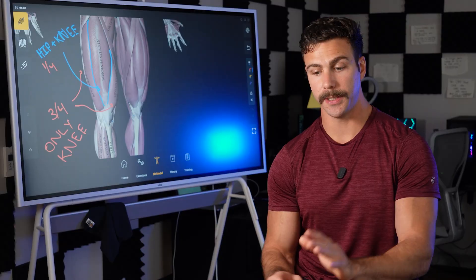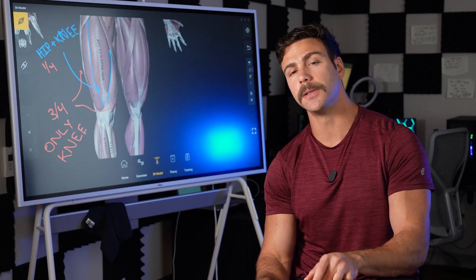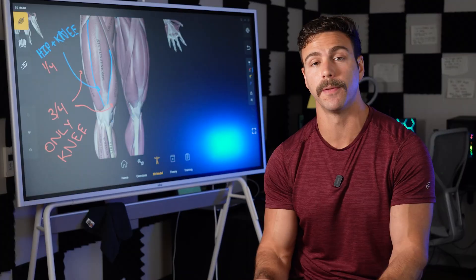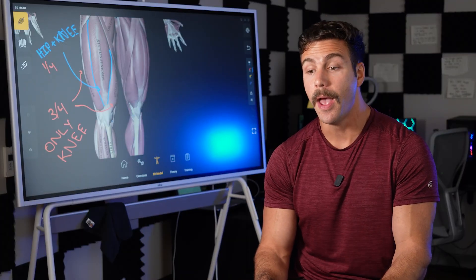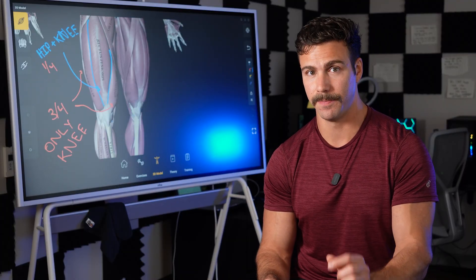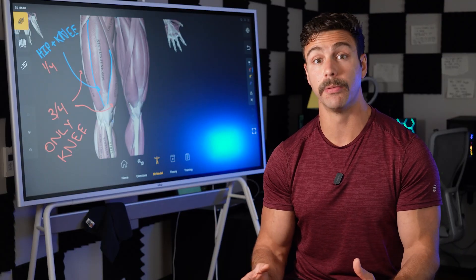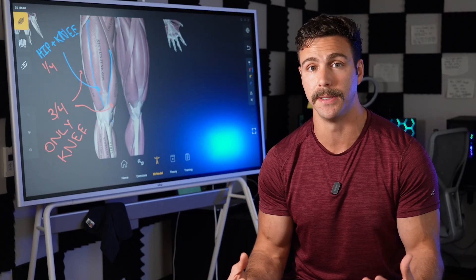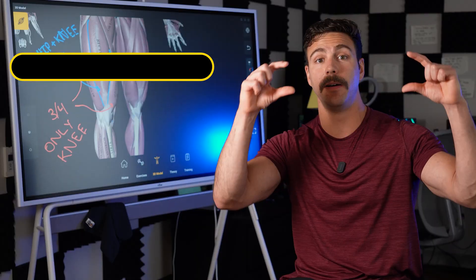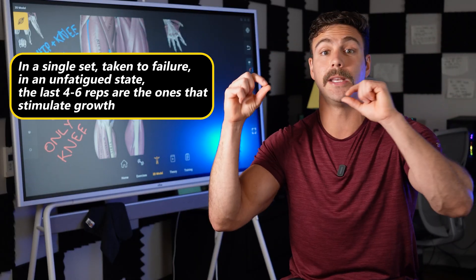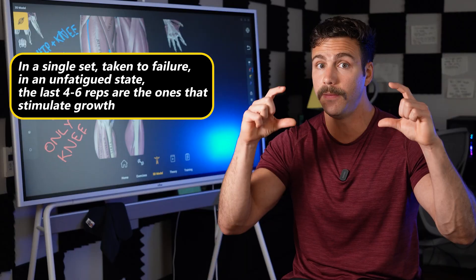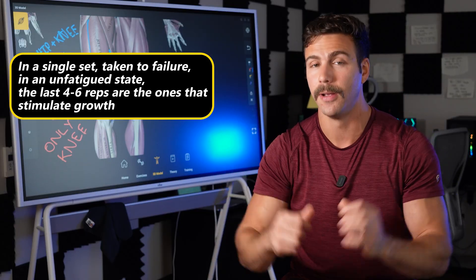So if your understanding just stopped here, you might think that every single set has the potential for five stimulating reps. However, that's not the case. When we take a look at the model and we remember the qualifying statements of in the context of a single strength training set taken to failure in an unfatigued state, right?